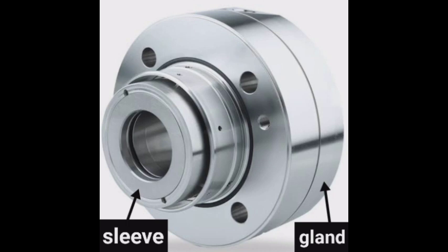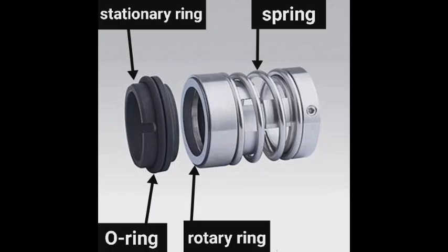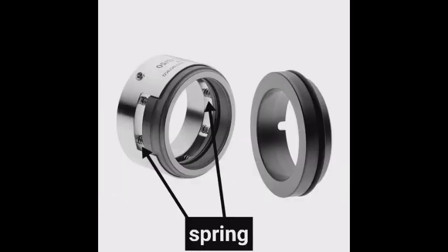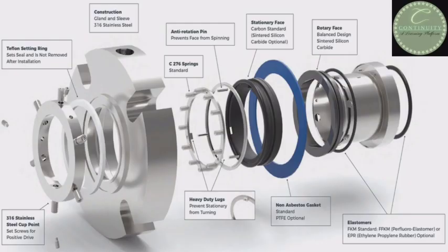Looking at this figure: this is the gland, this is the sleeve, this is the rotary ring, this is the stationary ring, this is the O-ring, this is the spring, and this is the set screw. The next figure shows a detailed explanation of all the mechanical seal components.